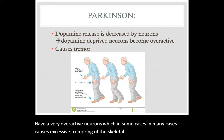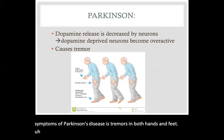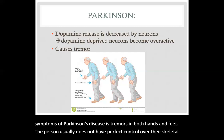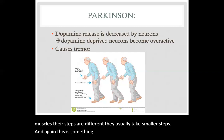A common symptom of Parkinson's disease is tremors in both hands and feet. The person usually does not have perfect control over their skeletal muscles — their steps are different and they typically take smaller steps. This is all associated with the neurotransmitter dopamine.